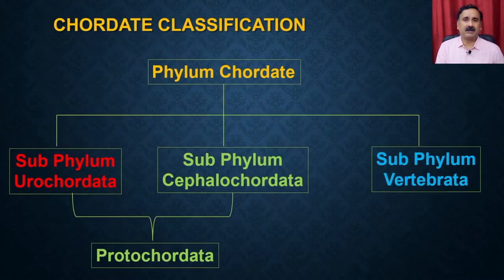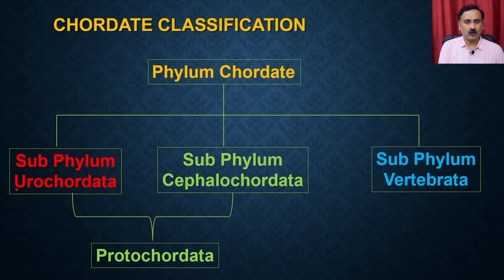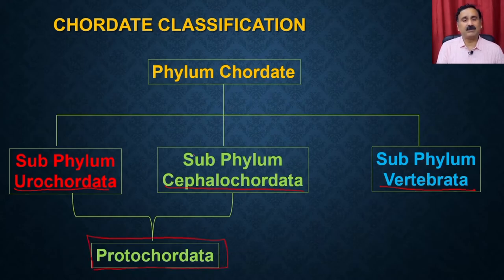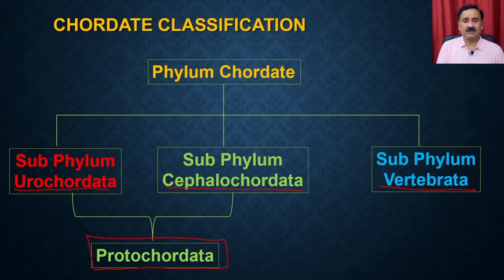The phylum Chordata is a very large phylum and is further divided into three sub-phylums: Urochordata, Cephalochordata, and Vertebrata. Cephalochordata and Urochordata are considered protochordata, meaning they do not have a well-developed system. Let us first discuss sub-phylum Urochordata and then Cephalochordata.